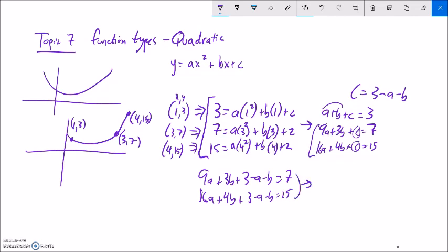So 9a minus a is 8a. 3b minus b is 2b. And then if I subtract 3 from both sides, that's a 4. Do something similar down here. 16a minus a is 15a. 4b minus b is 3b. And then minus 3, so that should be a 12.